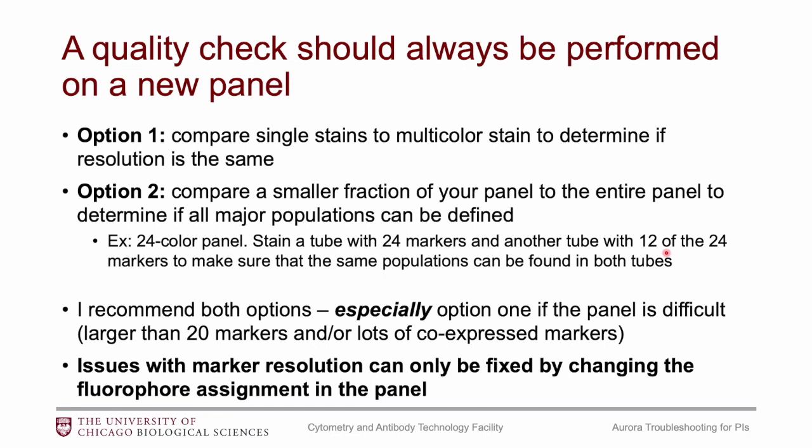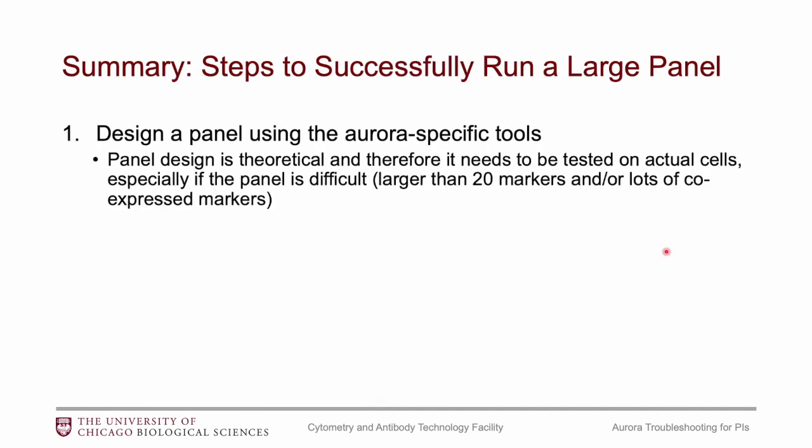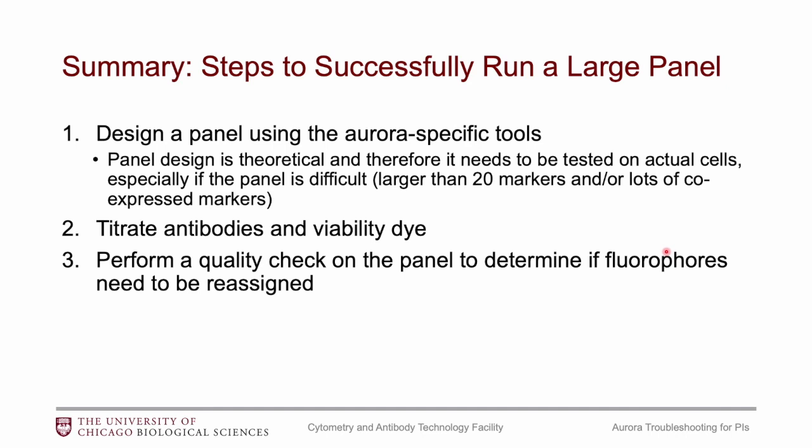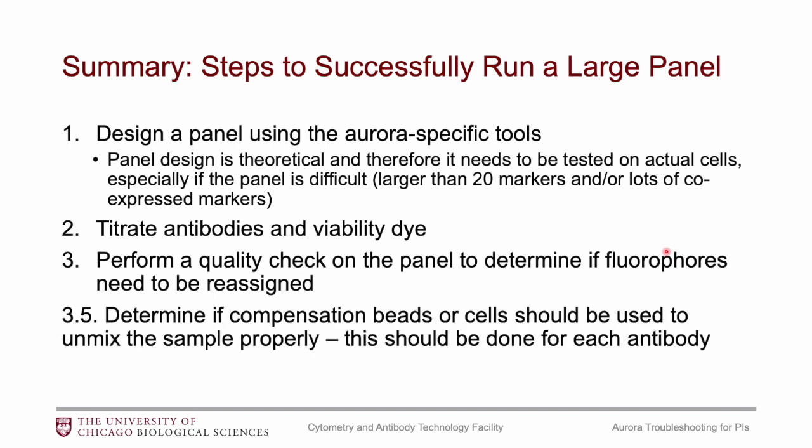If you find issues with the panel, the only way to fix them is to rearrange the panel. To summarize, the recommended steps for running a large panel are: first, design the panel using the Aurora-specific tools; second, titrate the antibodies and viability dye; third, perform a quality check to assess panel design; fourth, run the experiment comparing compensation beads and cells for reference controls to determine which to use; and finally, run your experiment.